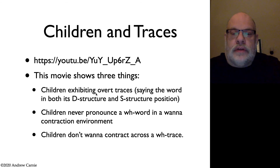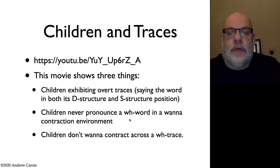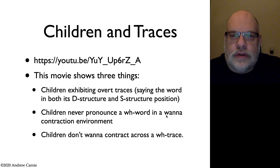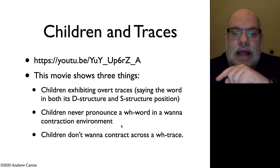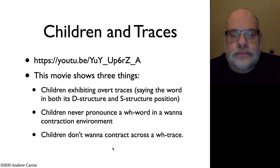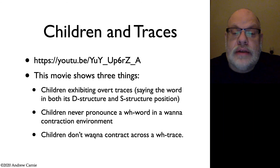The second thing you'll notice is that children never do this double-pronunciation when the WH word would be between want and to. They never say "who do you want who to leave?" — they just don't put a who in that position. Furthermore, when they actually say the sentence out loud, they say it without wanna contraction. They say "who do you want to see?" with want and to — they don't say "who do you wanna see?" So they do not contract in this environment either.